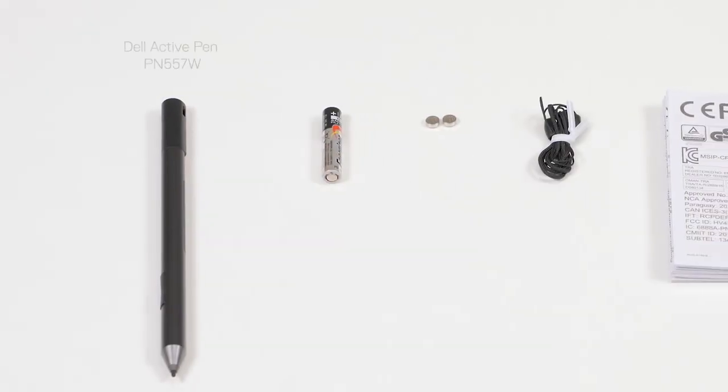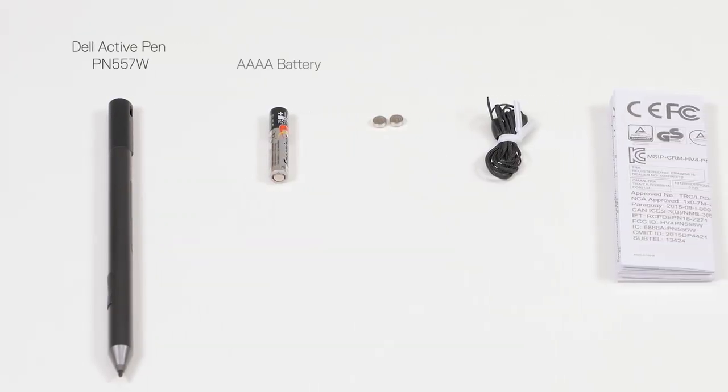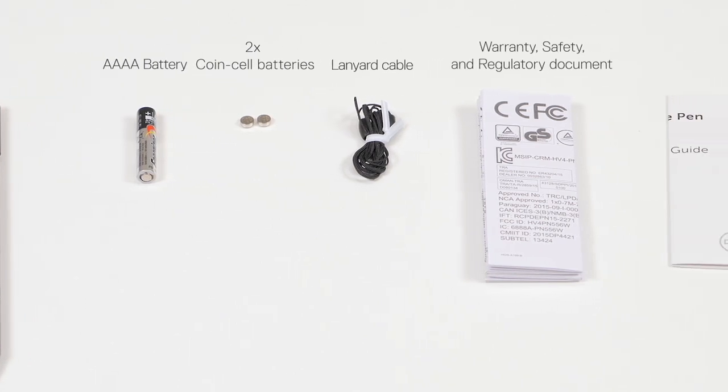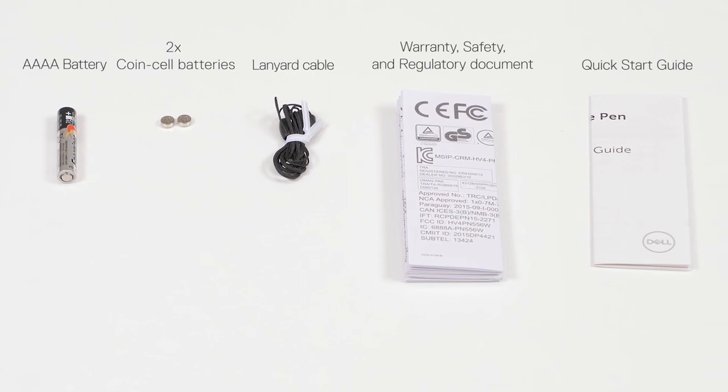Inside the box, you'll find the Dell Active Pen, a quadruple A battery, two coin cell batteries, a lanyard cable, a warranty safety and regulatory document, and the quick start guide.